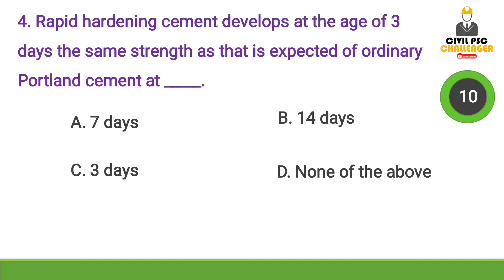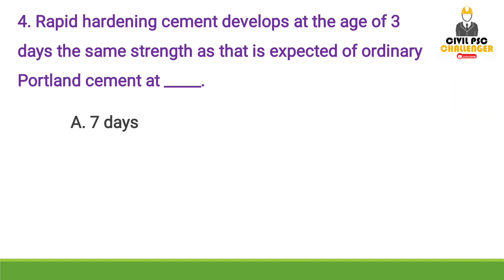Next question: Rapid hardening cement develops at the age of 3 days the same strength as that expected of ordinary Portland cement at — Answer: Option A, 7 days. OPC (Ordinary Portland Cement) attains its standard strength at 7 days, while rapid hardening cement attains the same strength in just 3 days.